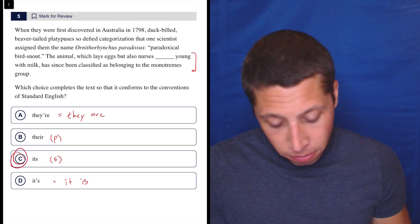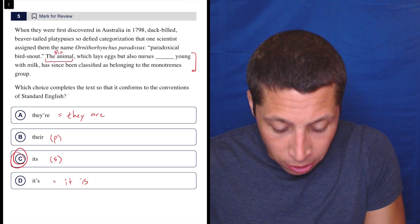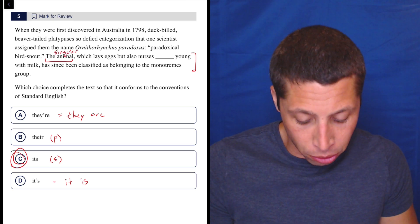The reason it was 'its' is it says 'the animal,' right? So that's singular. They're talking about one thing. It's not 'the animals, which lay eggs but also nurses its young.'